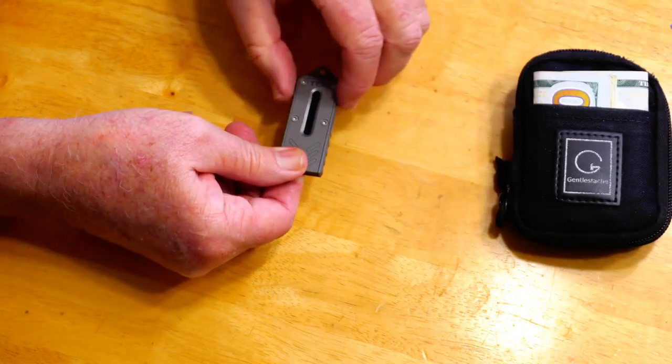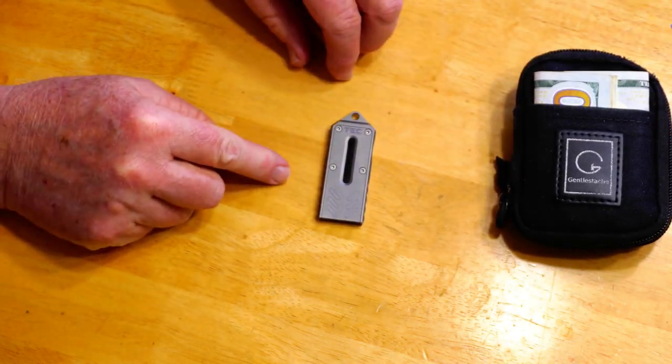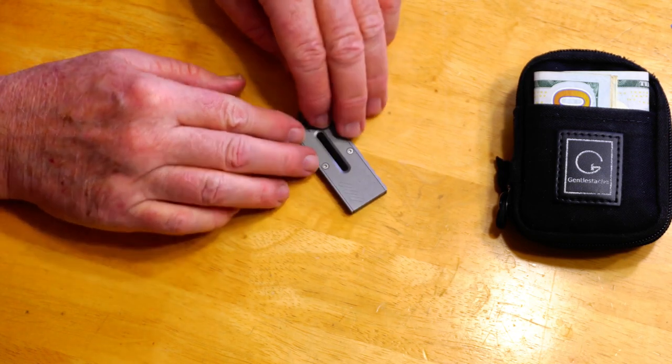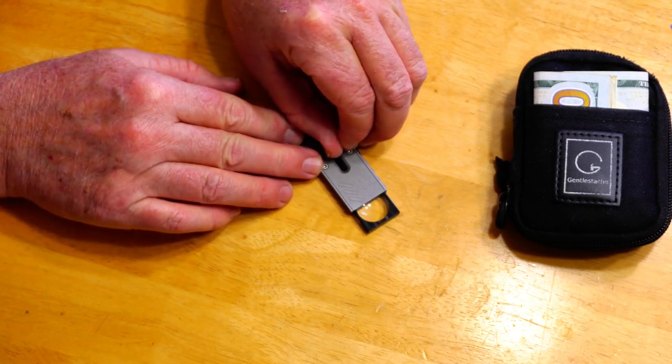This is the TEC Accessories pocket magnifier. This is a little metal case with a magnifying glass built into it.